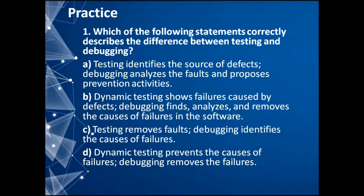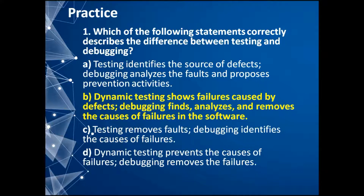Option B is true: dynamic testing shows failures caused by defects, and debugging finds, analyzes, and removes the causes of failures in the software. Option C: testing removes faults, debugging identifies the causes of failures — this is not true because testing doesn't remove faults. Option D: dynamic testing doesn't prevent the causes of failures — this option is also not true.